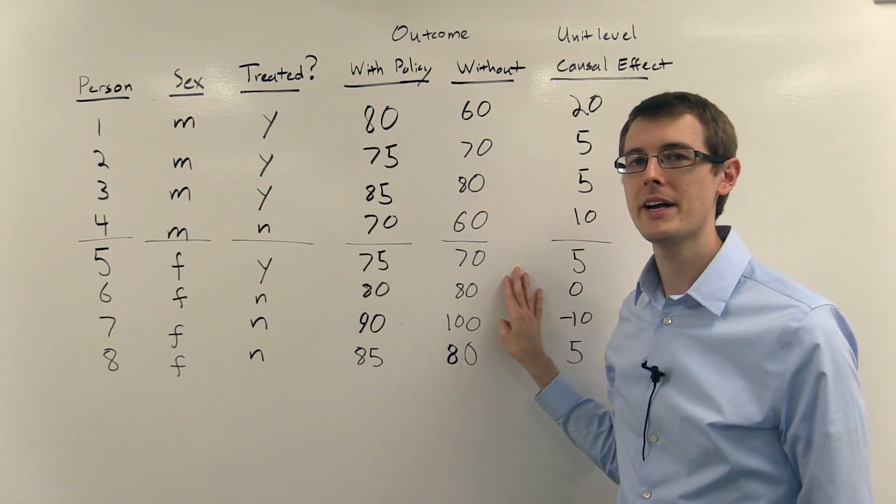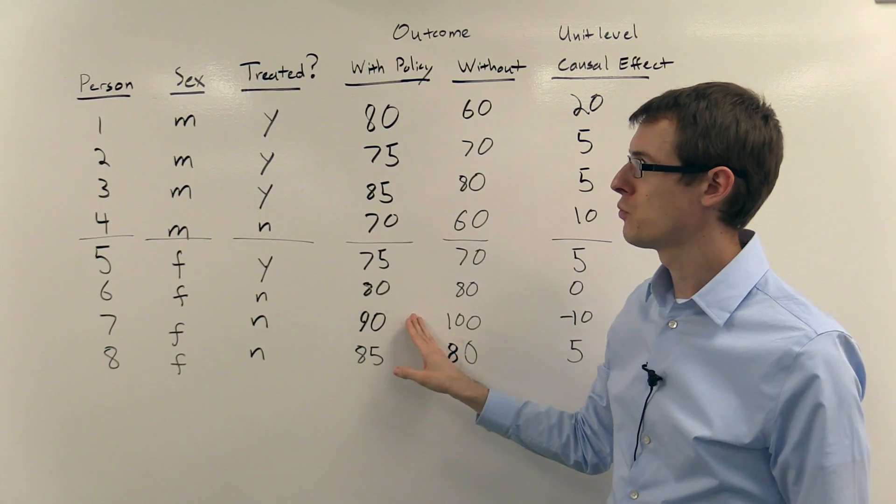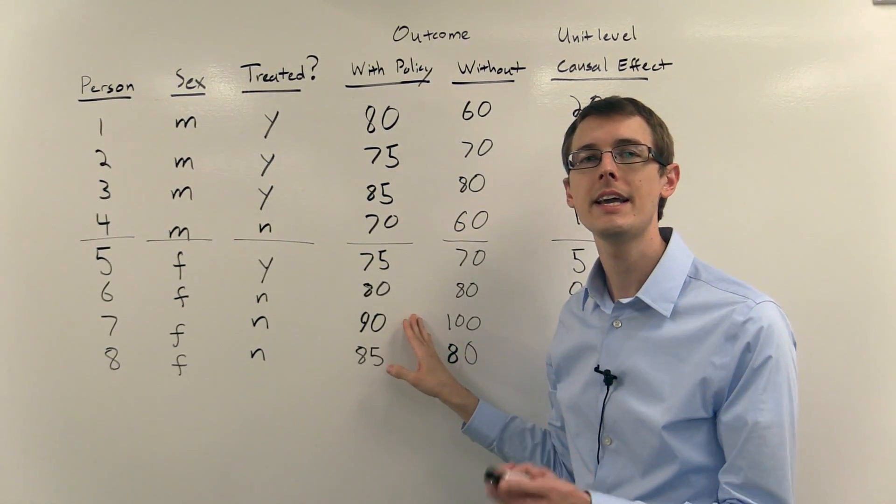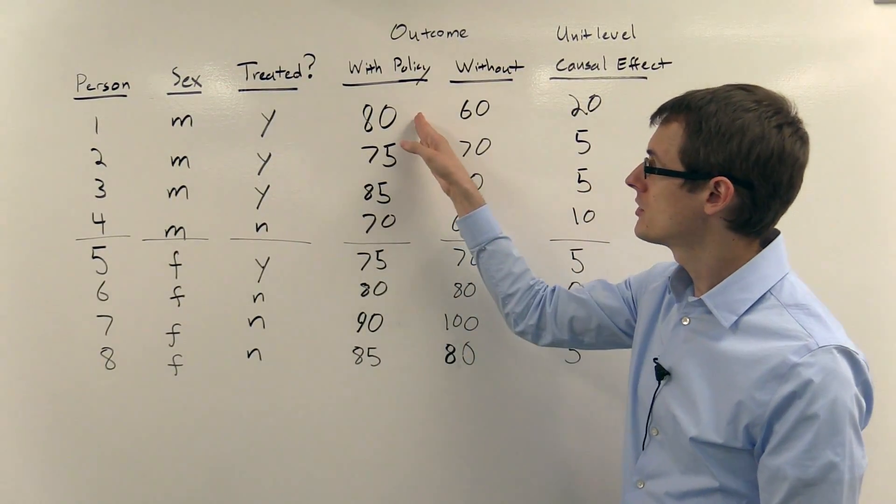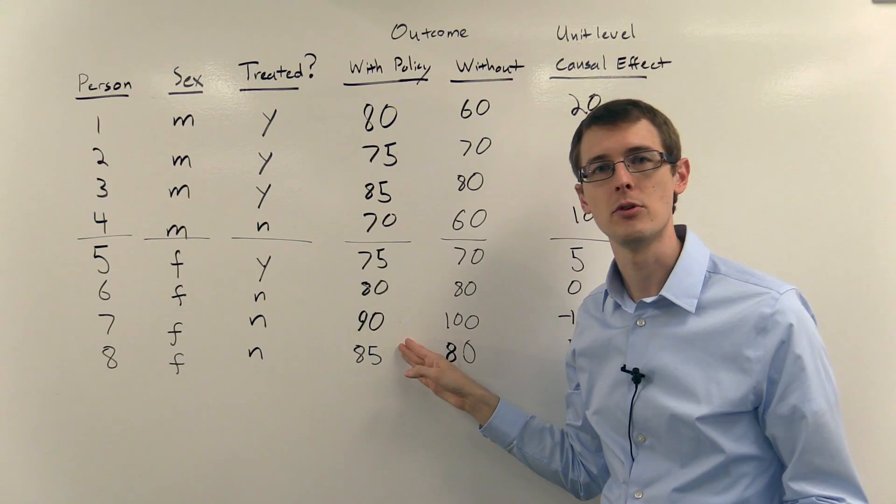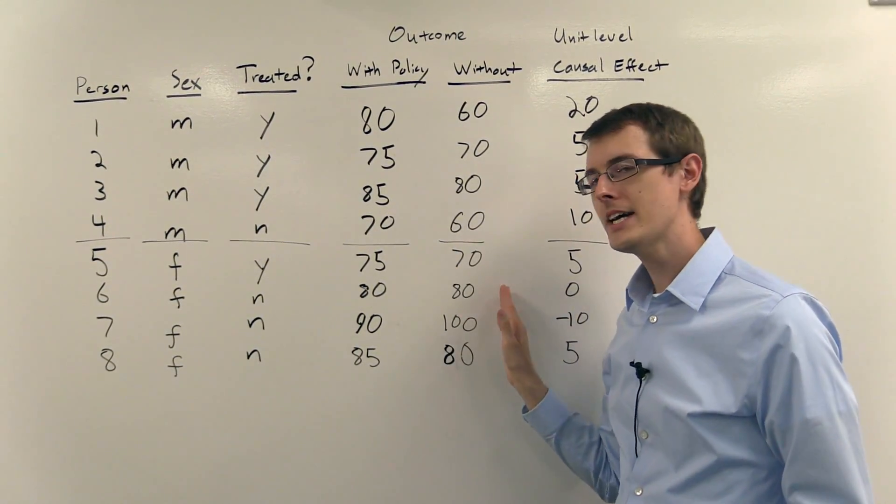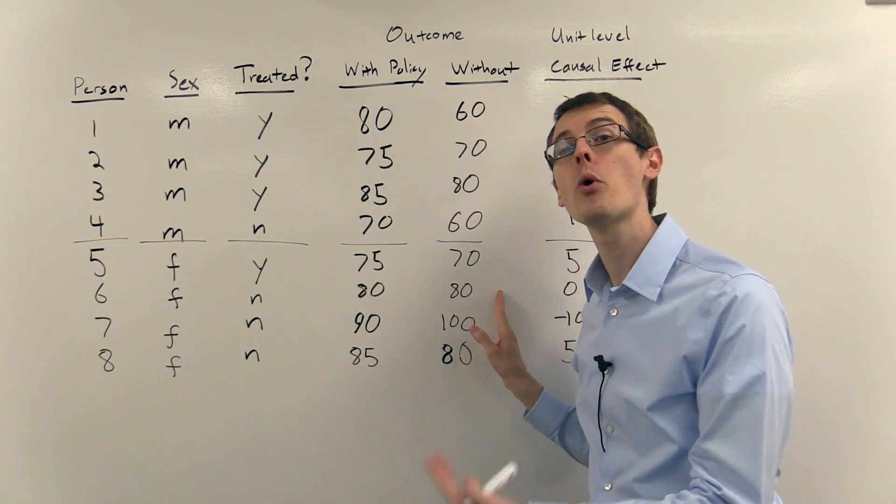Now over here I have my columns of potential outcomes. The first column is what outcome they would have if they were treated. So the first person has 80, 75, 85, 70, and then similarly for the females.